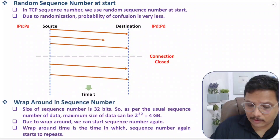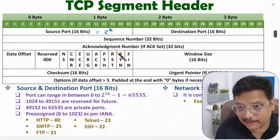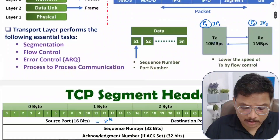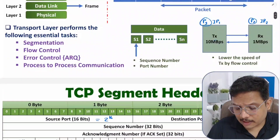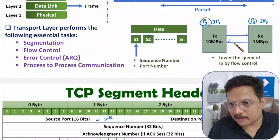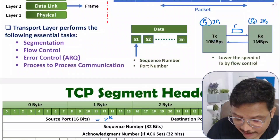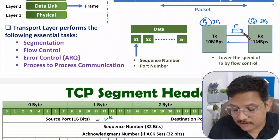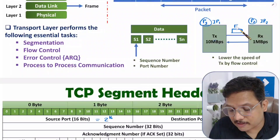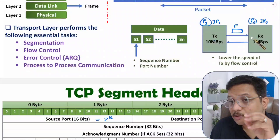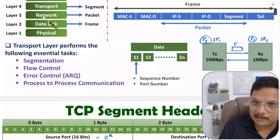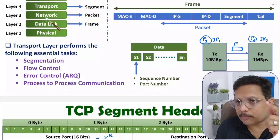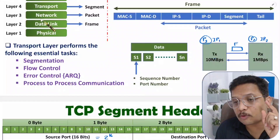Let us understand first why there is a need of acknowledgement number. In computer network, Internet Protocol works at the network layer. When transmitter and receiver communicate, communication happens via frames, and the transmitter has no idea whether the frame is received by the receiver or not. In Internet Protocol — IPv4 and IPv6 — there is no such functionality like acknowledgement. That is why Internet Protocol service is unreliable.